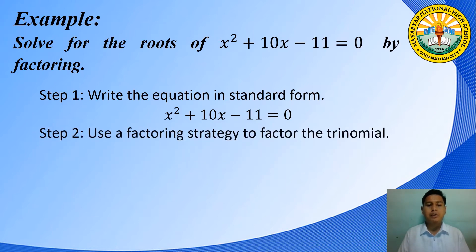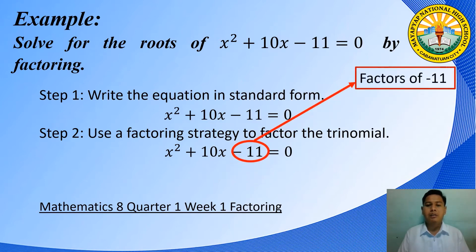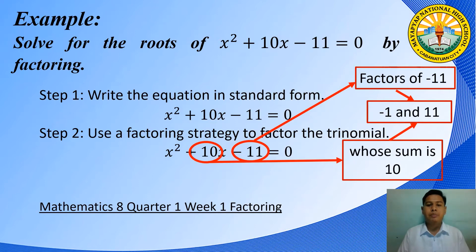Step 2: use a factoring strategy to factor the trinomial. If you need a full discussion about factoring, search the video lessons Mathematics 8, Quarter 1, Week 1, factoring, in our official YouTube channel. The factors of negative 11 whose sum is 10 are negative 1 and 11. So the factors of x squared plus 10x minus 11 are x minus 1 and x plus 11.